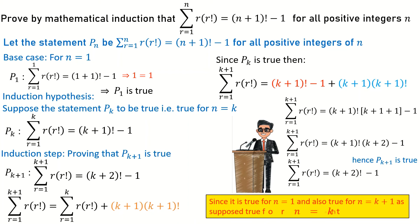My conclusion: since it is true for n equal to one, and also true for n equal to k plus one assuming it is true for n equal to k, then it is true for all n in the set of positive integers, as proved by mathematical induction.